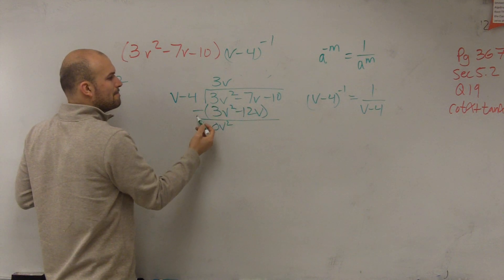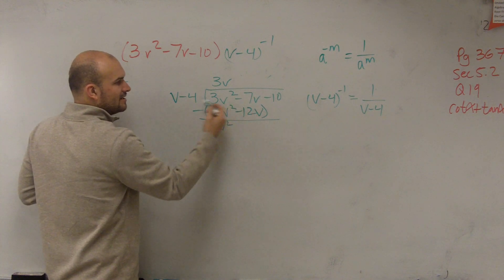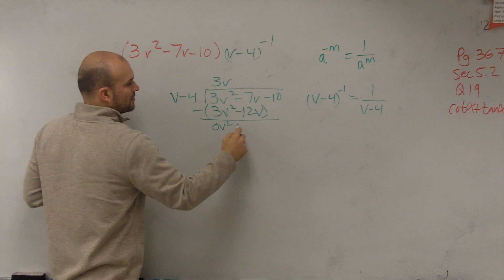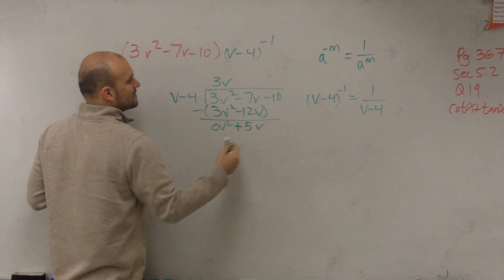Now, 3v squared minus 3v squared is 0v squared. Negative 7v minus a negative 12v. That's becoming double negative, so therefore you'll be left with a positive 5v.